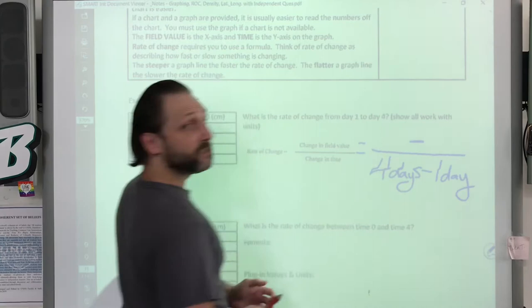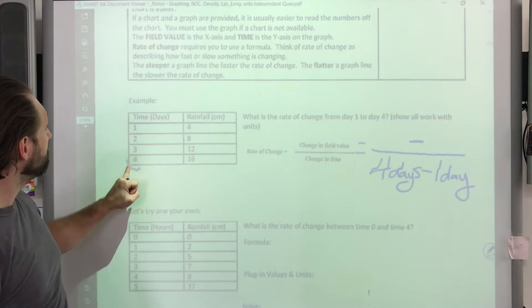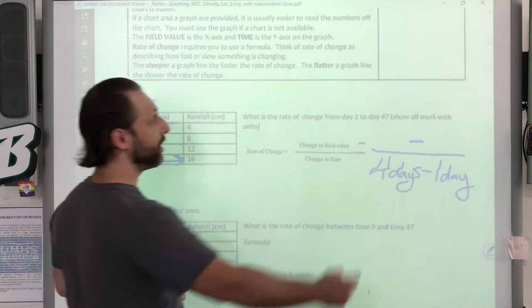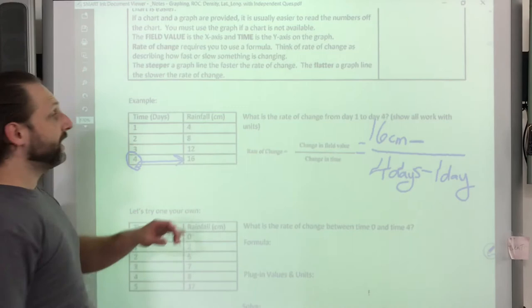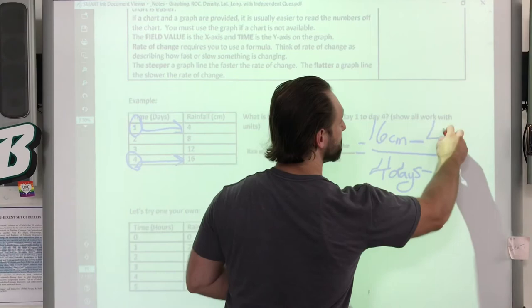In order for us to get the information on top, we have to see what synchronizes with this time over in our chart. So we've got four days. We're going to find four days around here and it goes with 16 centimeters of precipitation. In this case, the precipitation is rainfall. Now at day one, we come up here and we find day one and it has a rainfall of four centimeters.